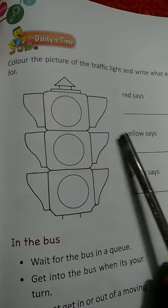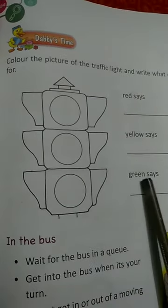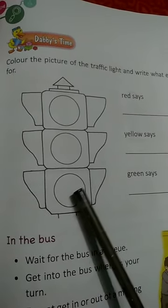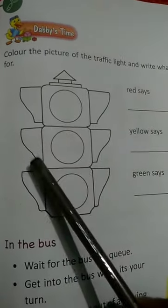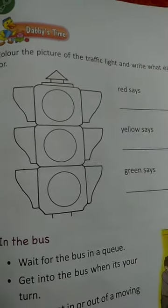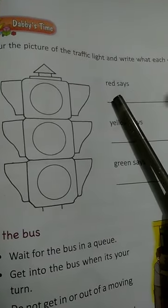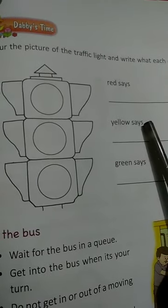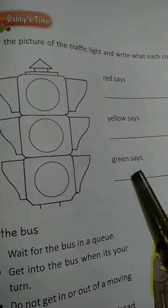You have to color this traffic signal. The first circle color red, the second one color yellow, and the third one color green. There are some designs given, so you need to color those designs with black. What does red light say? Stop — write S-T-O-P. Yellow says wait — W-A-I-T. And green says go — G-O.